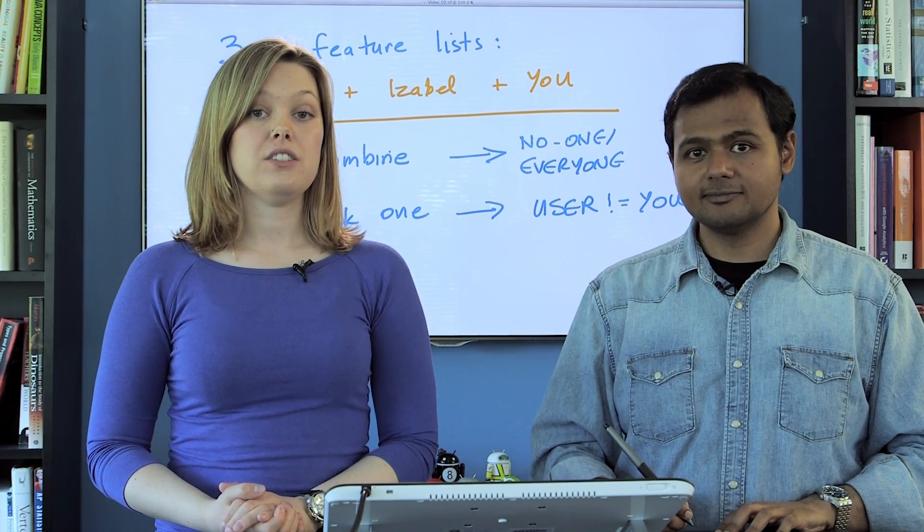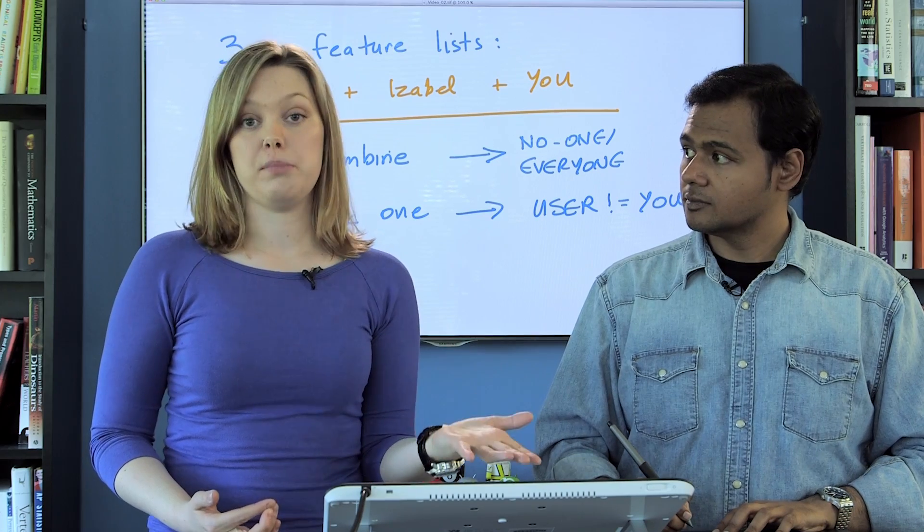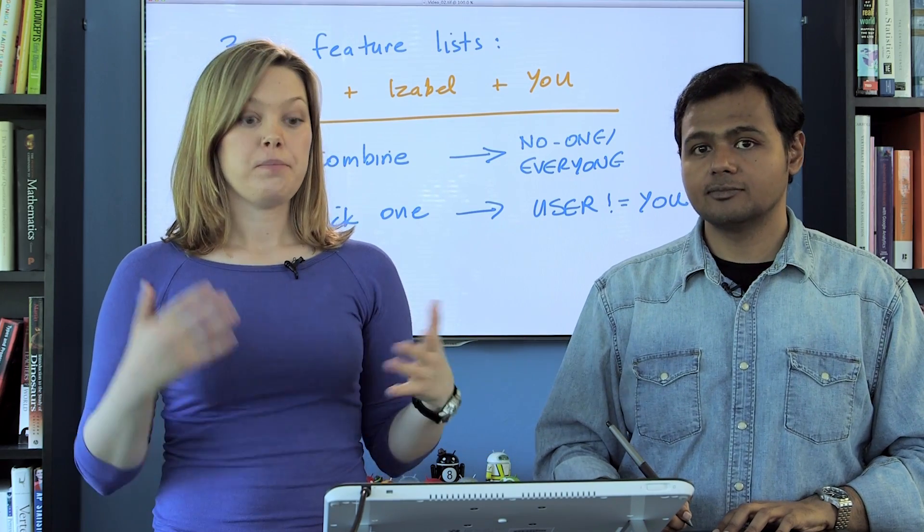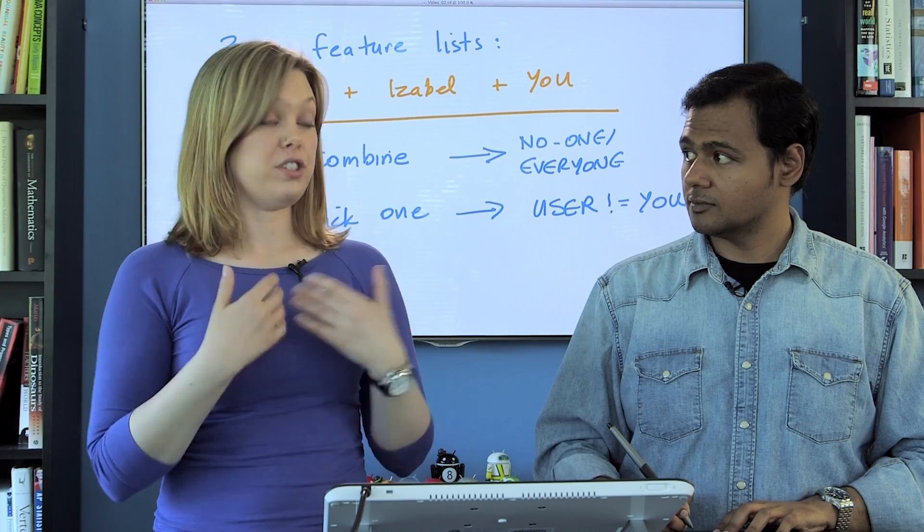So one of the keys to user-centric design is overcoming our own biases. What we've experienced here is preference bias, that our own preferences are being put directly into a feature list. We're not designing for a user, we're just designing for ourselves.